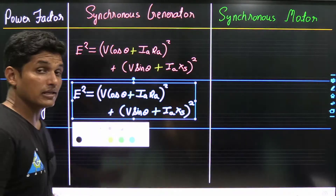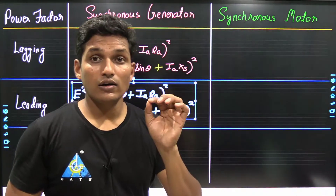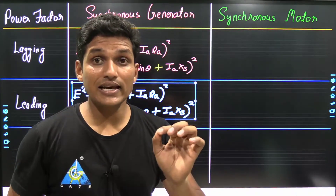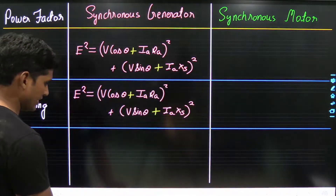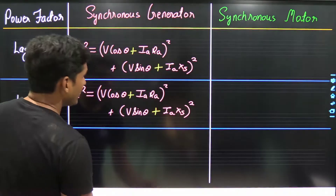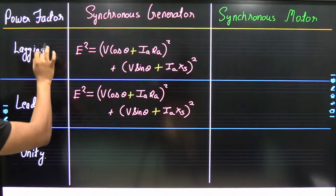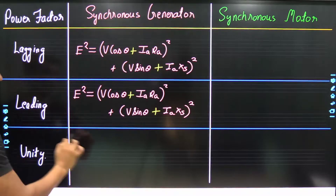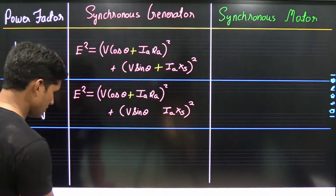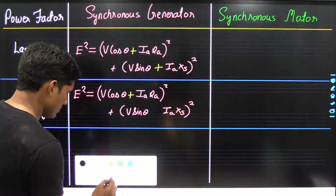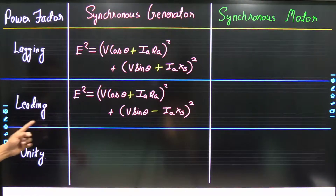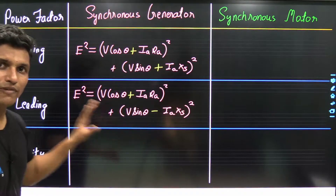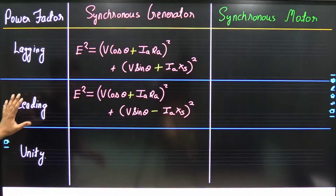For leading power factor, only the sign of the V sin θ term is changed. It was plus for lagging power factor, so it becomes minus for leading power factor. That gives the formula for induced EMF at leading power factor in a synchronous generator.